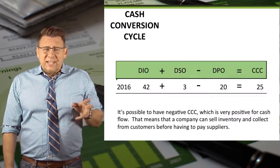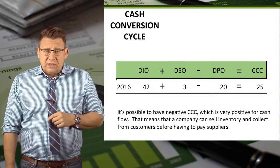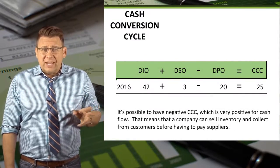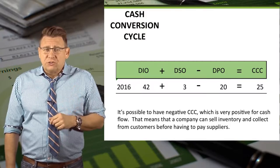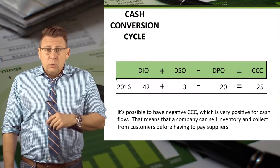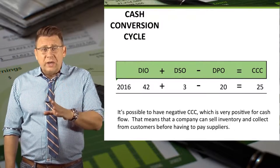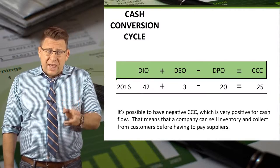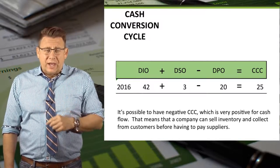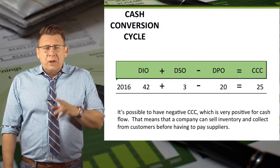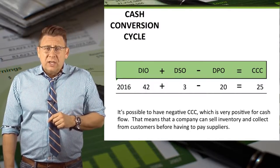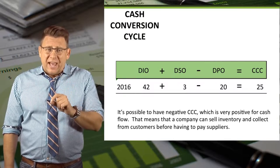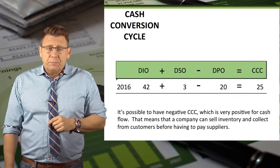Using data already calculated from prior ratios, this sample company has a cash conversion cycle of 25 days, which impacts liquidity because it takes about 25 days to go from cash to more cash. But it also impacts efficiency, because most of the cash is tied up with inventory.